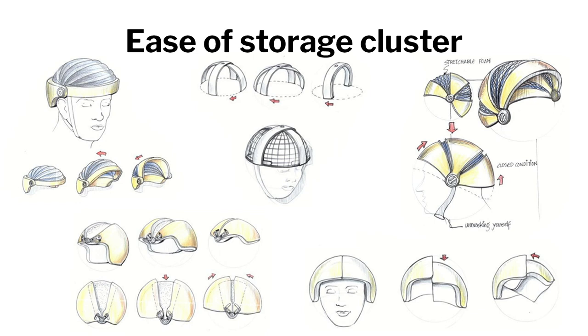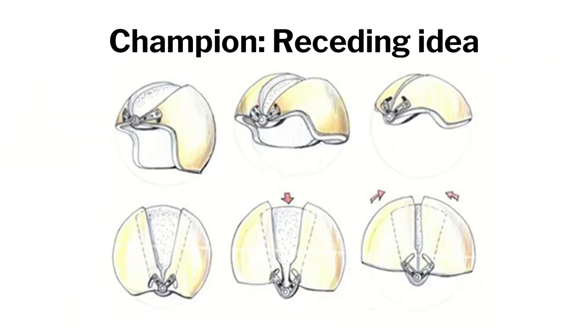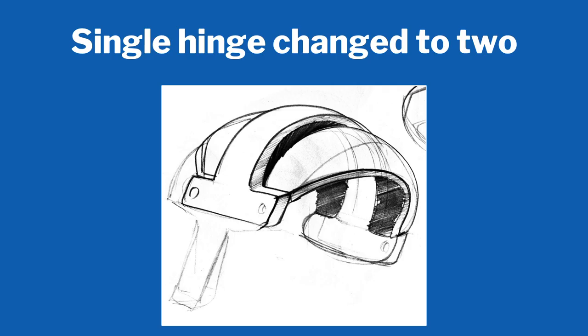In this, the student somehow selected the receding idea, amalgamated these two and did not take one idea together. He said that he would like to make it very slim, so he started with this, which is part of the receding idea. He chose that as a champion and then took it forward from here.